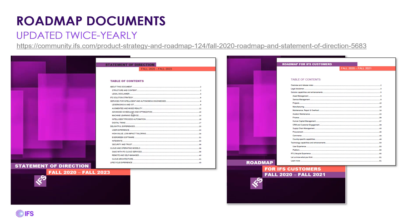The statement of direction gives you the overview of higher level topics — advanced scheduling and optimization, machine learning, what IFS is planning to do in those areas, or remote and self-managed cloud operating models. And if you want to get into individual functional areas, you can see what new functionality items are planned to come out over time. The community also gives you a wealth of other information and allows you a big opportunity to network with other customers, partners, and IFS people for questions and other discussions.